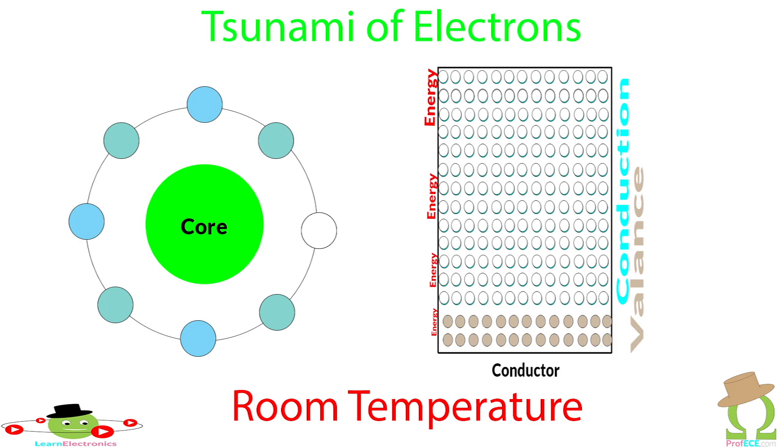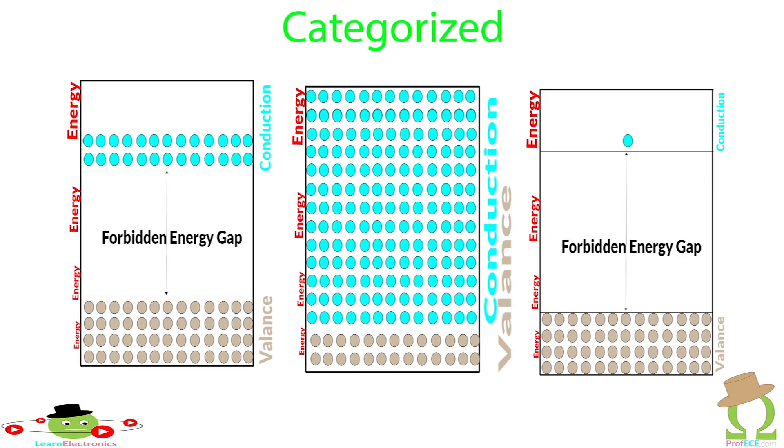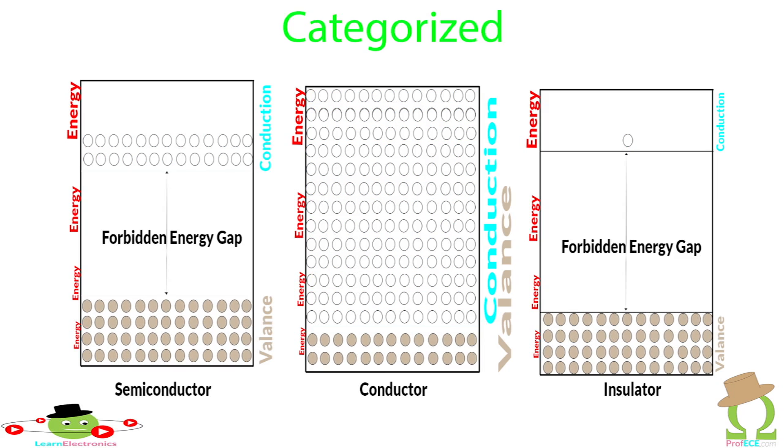Drawing the energy band diagram for these materials is really simple. Valence and conduction bands overlap. These materials are called conductors.